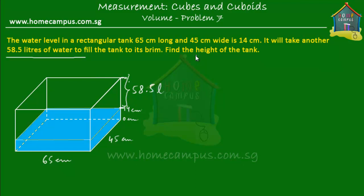Now how do we find out the height of the tank? We know the length and the width of the tank. If we can find out the maximum volume or maximum capacity of the tank, then we can plug all those numbers into the volume formula and that will give us the height of the tank. We know that from the water surface to the brim is 58.5 liters of capacity. How do we find out the capacity from the base to 14 cm?